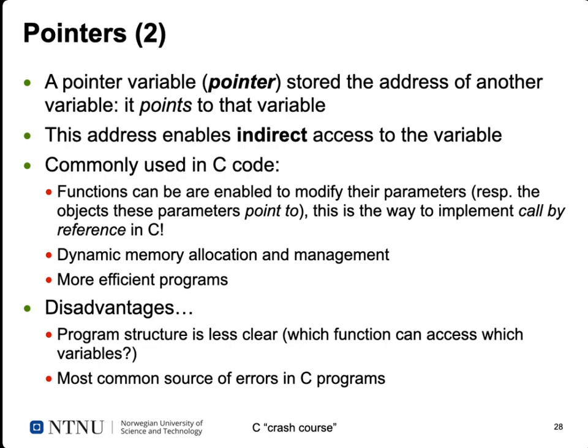A pointer variable stores the address of another variable — we say it points to the variable — and this allows indirect access. This is very commonly used in C. Functions can be enabled to modify their parameters. Since functions only have call by value, if we want to modify parameters passed to a function, we need to pass a pointer so code inside the function can directly manipulate the memory location. We also have to use pointers for dynamic memory allocation and memory management, and they can make programs more efficient.